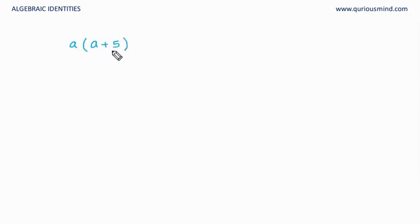a multiplied by a plus 5. If I simplify this, I will have to multiply this outside a with every term inside this bracket. So, a into a gives me a square and a into 5 gives me 5a and there is a plus sign here, 5a. Let's take another thing here.